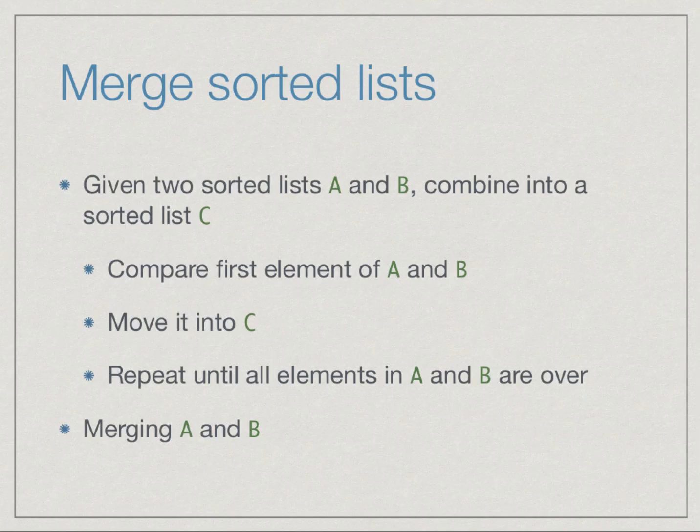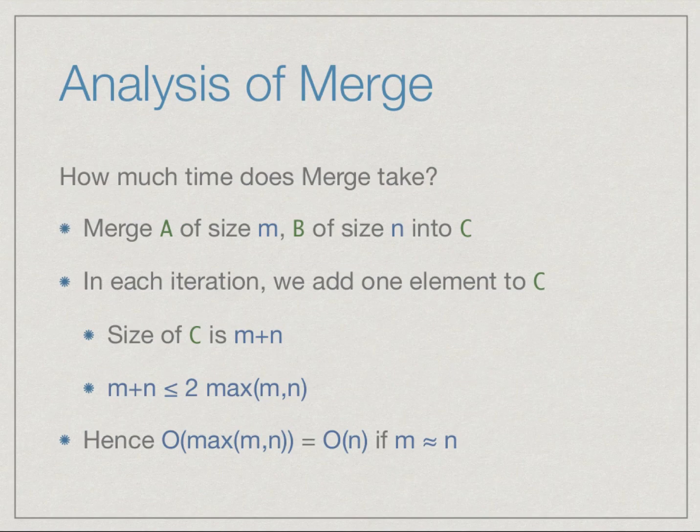Recall that merge sort has at its base a merging algorithm which takes two sorted lists A and B and combines them one at a time by doing a scan over all elements. In order to analyze merge sort, the first thing we need to do is give an analysis of the merge function itself.